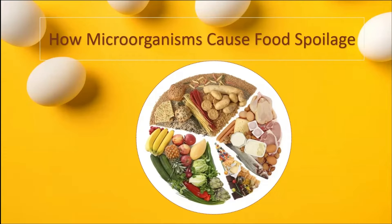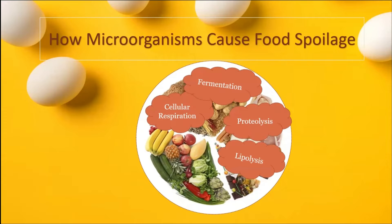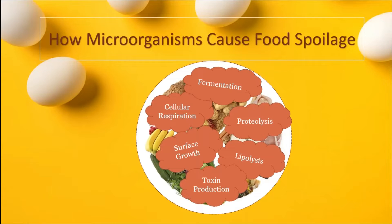These biochemical reactions are the mechanism that changes the characteristics of food. For example, sugars and carbohydrates are digested by cellular respiration or fermentation. Protein can be digested by the proteolysis process, and fat can be digested by the lipolysis process. Microbial growth on food surfaces and toxin production are also ways of causing spoilage.